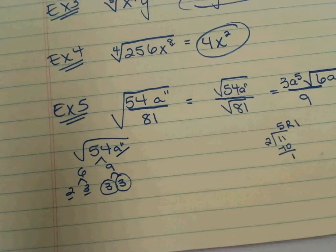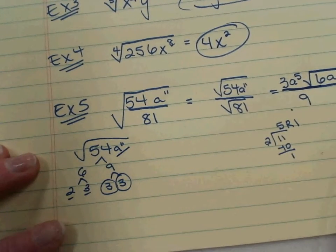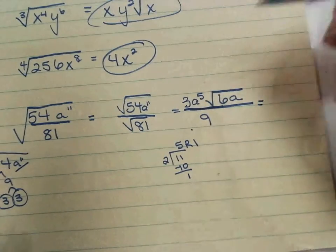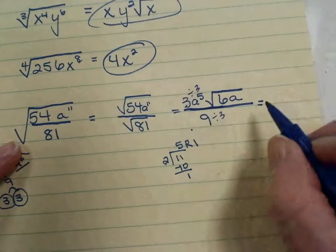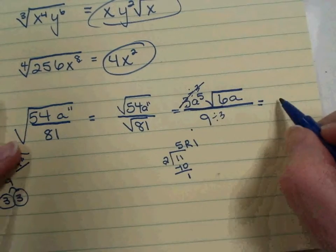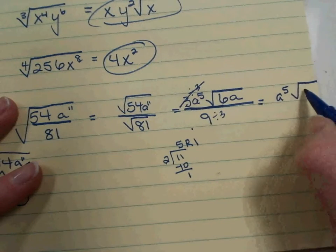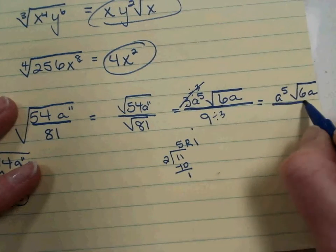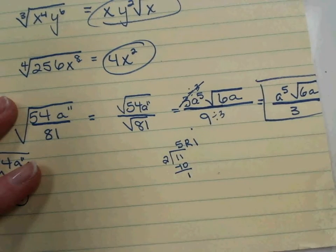Or, like I said, you can write out all the a's. 11 of them. Or maybe you're just picturing that. All 11 of them. Oh, there's that 1 left over. Am I done? I'm not done. 3 and 9 have a common factor of 3. So divide numerator and denominator by 3. 3 divided by 3 is 1. So they cancel out. a to the 5th. Radical 6a. Over 9 divided by 3 is 3. And now that's my final answer.